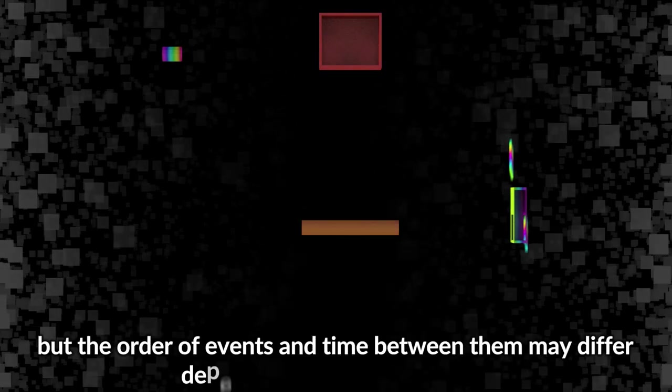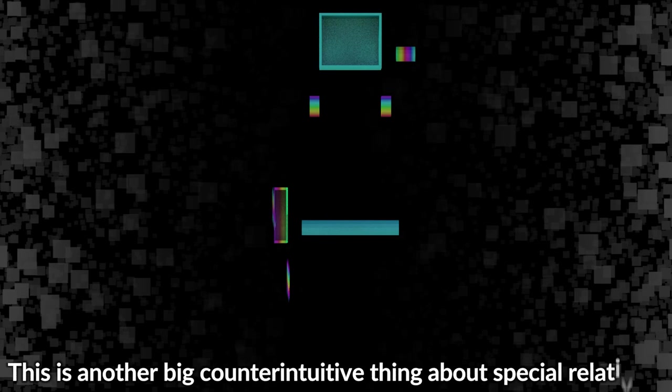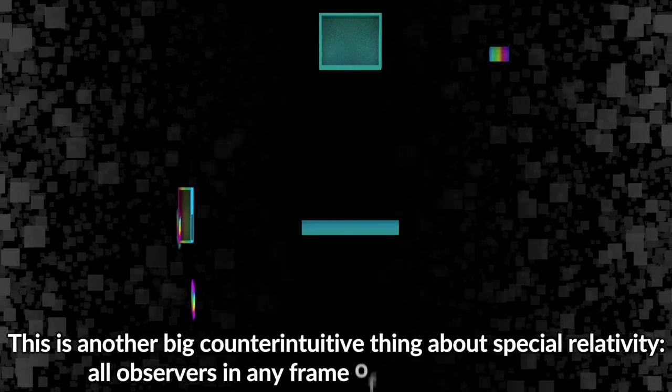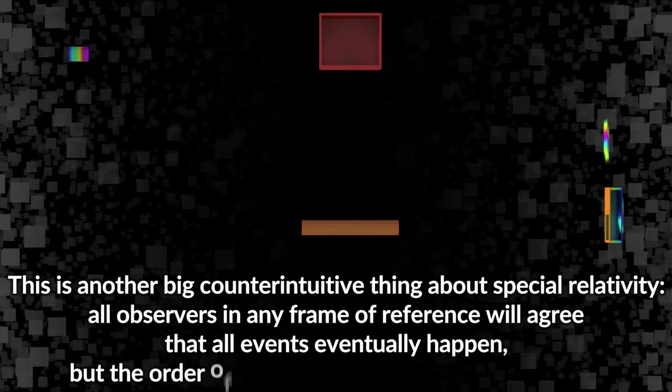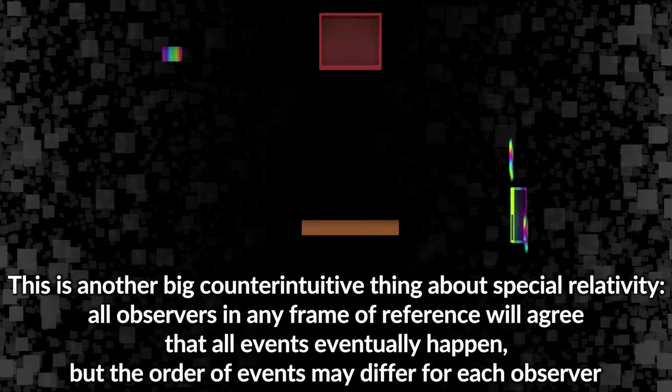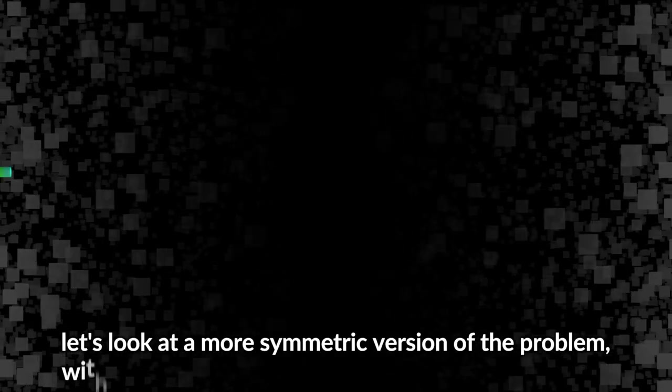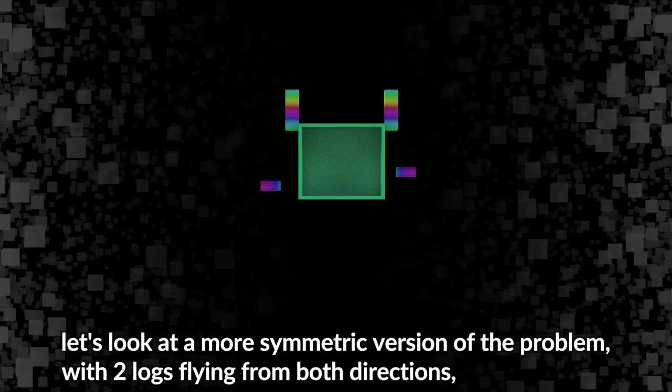There is no contradiction, but the order of events and time between them may differ depending on reference frame. This is another big counterintuitive thing about special relativity: all observers in any frame of reference will agree that all events eventually happen, but the order of events may differ for each observer.